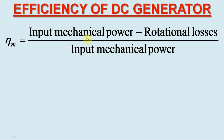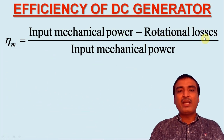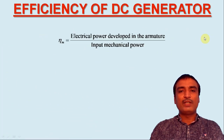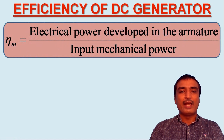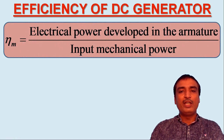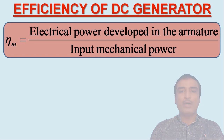The term input mechanical power minus rotational losses is nothing but the electrical power developed in the armature, Eg×Ia. So the mechanical efficiency of the DC generator is rewritten as electrical power developed in the armature over input mechanical power.